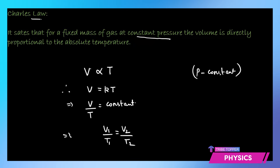In numerical problems you use Charles' Law as v1/t1 = v2/t2. Remember in this case your pressure has to be constant. While reading the problem, when pressure is marked constant and volume and temperature are changing, you will use this relation. Out of the four variables, three will be given and one will be unknown, which you can find using this law.